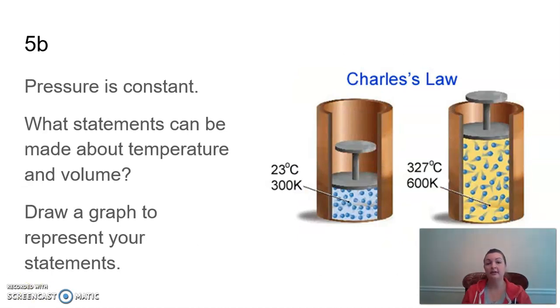So now we're looking at Charles's Law. Charles's Law is stating pressure is constant. What statement can be made about temperature and volume? And then draw a graph to represent your statements. So we have two more chambers or containers over here. What we can see is this one is at 300 Kelvin. That's the temperature. This one is at 600 Kelvin, significantly higher.